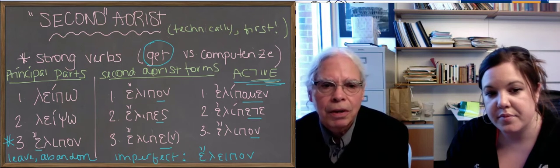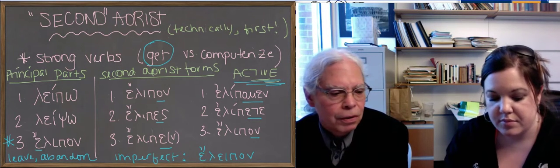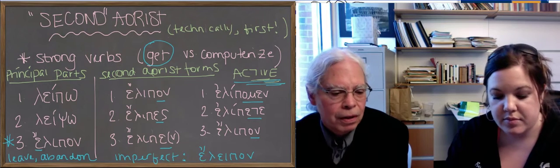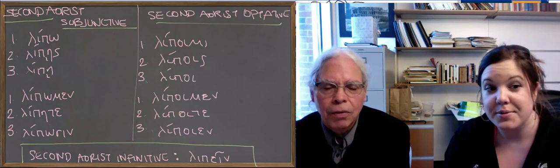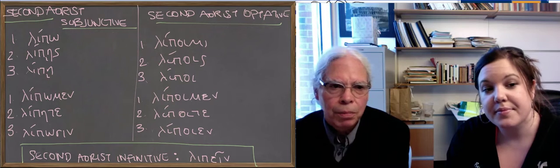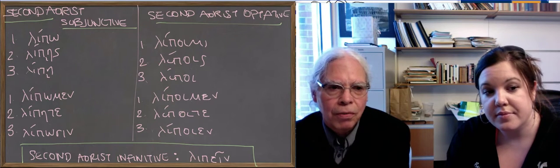If we go to the next blackboard and look at the forms of the subjunctive and of the optative, these are, again, only active forms. You could look at the middle forms yourselves.